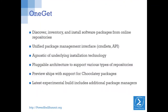OneGet is a new module in WMF5 that makes it much easier to discover, inventory, and install software packages from a variety of repositories, both online and local stores. The key value proposition with OneGet is that it provides a unified package management interface. We have a set of cmdlets, but we also have a C# API, and the team has talked about potentially having a WMI interface as well.